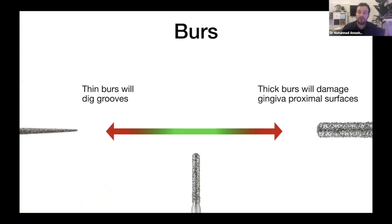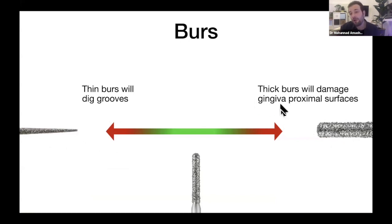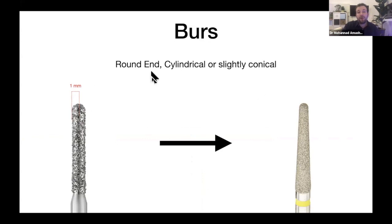Now for the preparation — let's talk about burrs, the most fundamental tool we use daily. If burrs are too thin, they will dig grooves in your preparation. If they are too thick, it becomes very difficult to achieve the preparation you want without damaging the gingiva at the finish line and the proximal surfaces. You want to be in the green zone, around 1.5 mm. I always like to use a round-ended burr, either cylindrical or slightly conical.